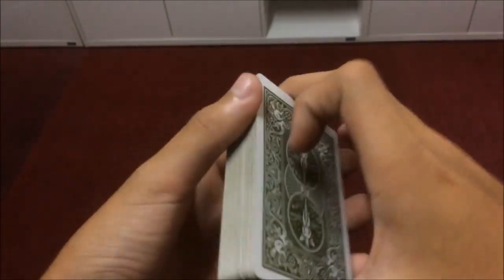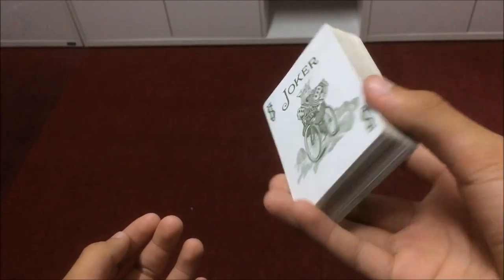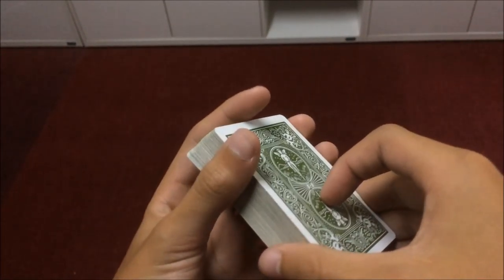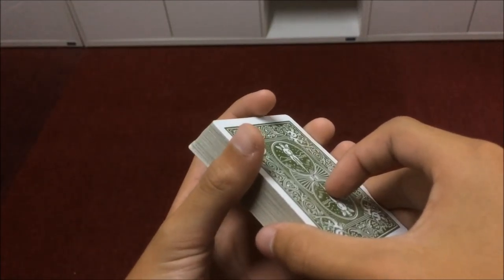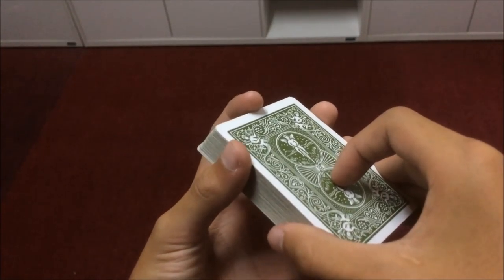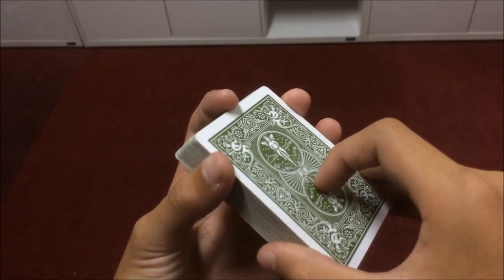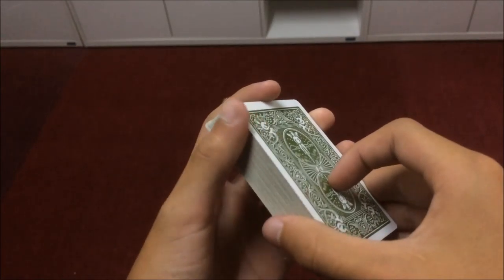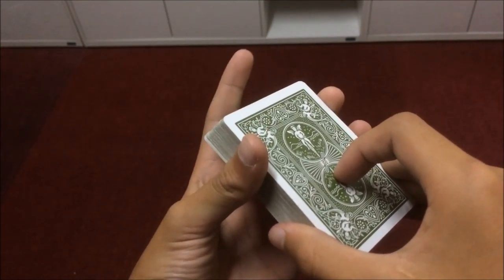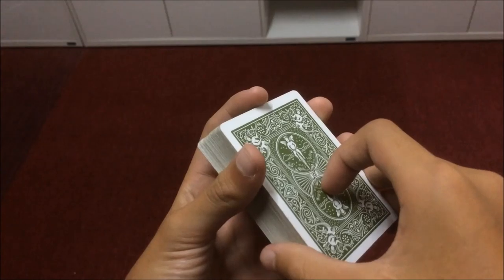So this is the grip. Now what you do is come with your left hand and you're gonna contact with four fingers. Your thumb at the left hand side, your first finger at the front edge of the deck, middle and ring fingers at the right hand side of the deck.